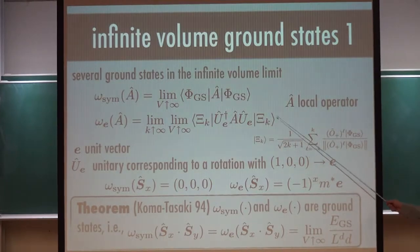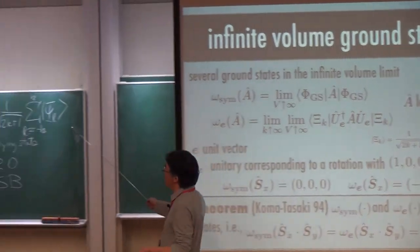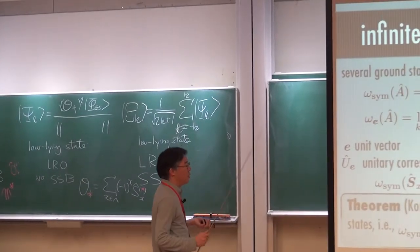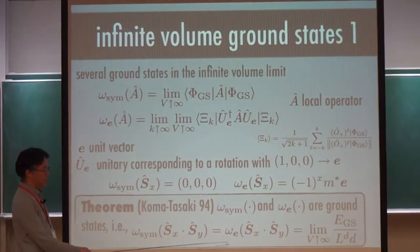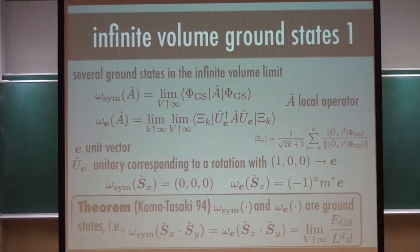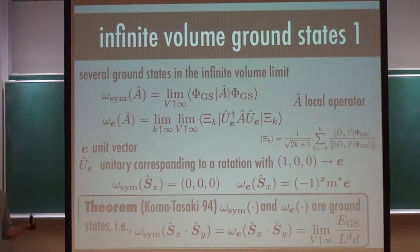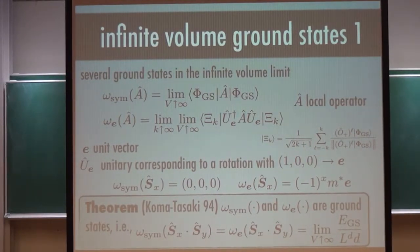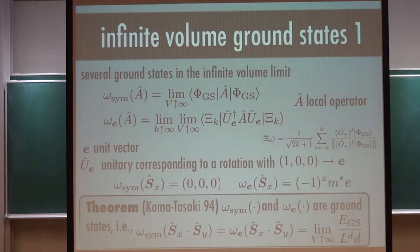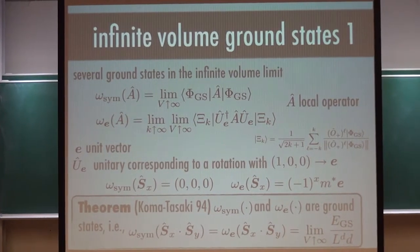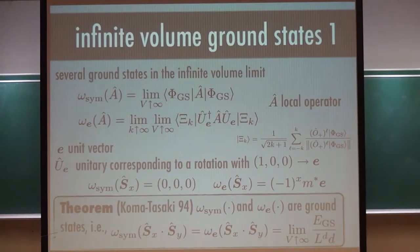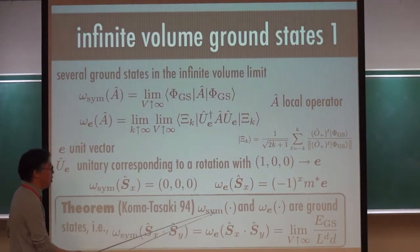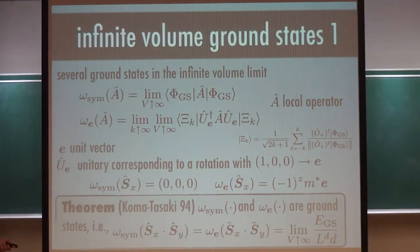By constructing these states, we find that if you take omega-sim and take the expectation value of the spin operator, it's zero. But if you take omega-E, the expectation value is as everybody expects — it's proportional to M star in direction E. This was constructed from psi_k, not the exact ground state of the finite system, but you can show that in the infinite volume limit, they are both ground states.